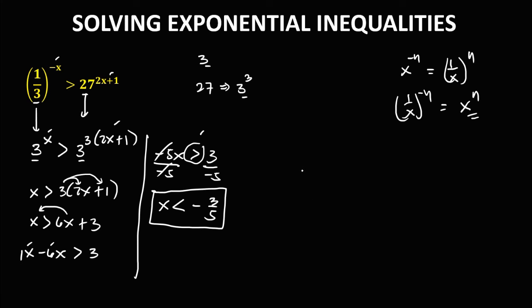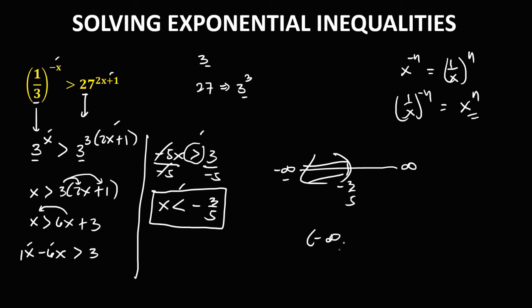To find the interval notation: since x is less than negative 3/5, all numbers to the left of negative 3/5 satisfy the inequality. In interval notation, the solution set is from negative infinity to negative 3/5, written as (negative infinity, negative 3/5).